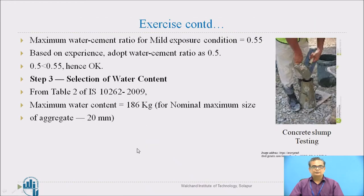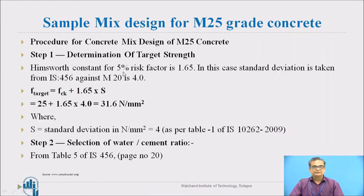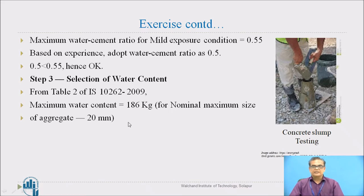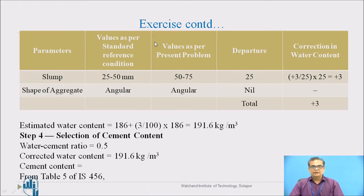Step two — selection of water-cement ratio: using IS 456 Table 5, for maximum mild exposure condition, the maximum free water-cement ratio is 0.55, and we adopt 0.5. Step three — selection of water content: maximum water content comes to 186 kg from Table 2 of IS 10262, for nominal maximum aggregate size of 20 mm. For slump from 50 to 75 mm, a correction in water content is applied, and the estimated water content after correction is calculated accordingly.